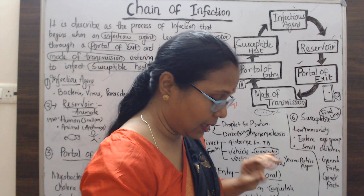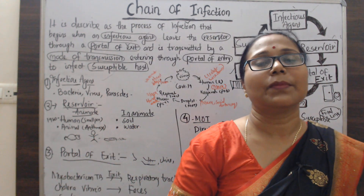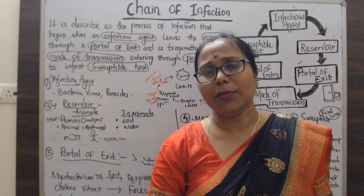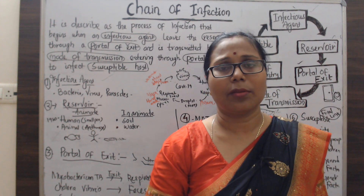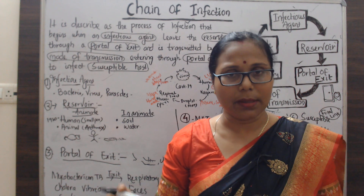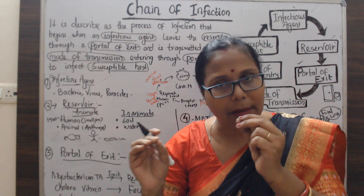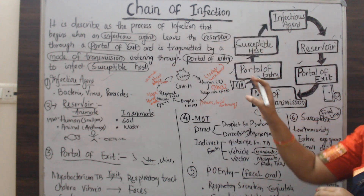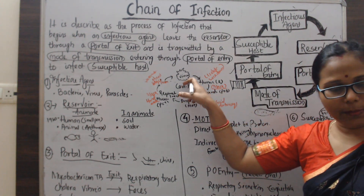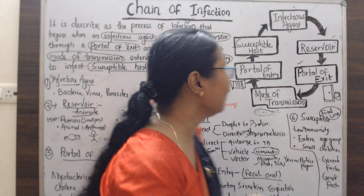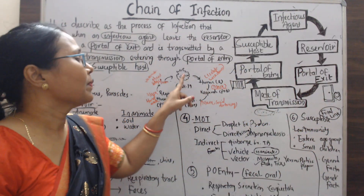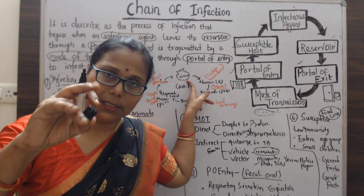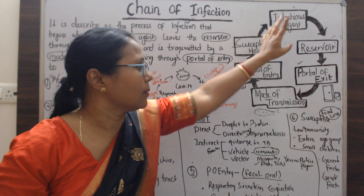Let's take COVID-19 as an example, since we all know the pandemic affected us for two to three years. We will apply the coronavirus to this chain of infection diagram. The coronavirus is the infectious agent — the first component.